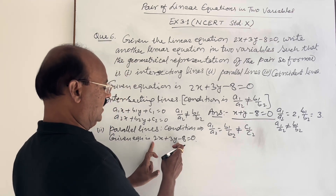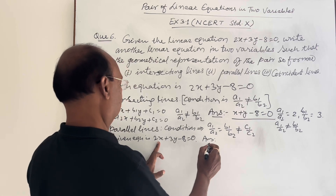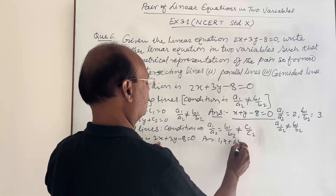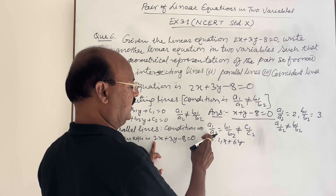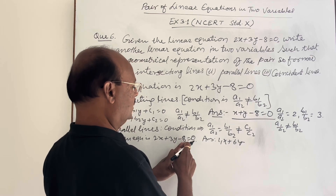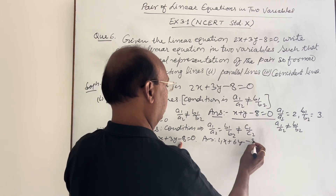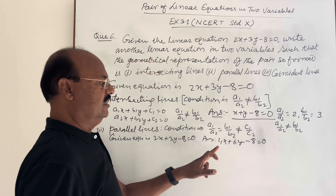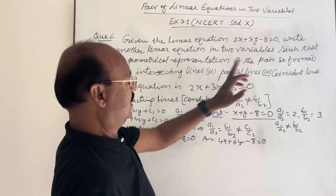So let us multiply the x and y part by 2. The answer will be 4x + 6y, so that a1/a2 = 1/2 and b1/b2 = 1/2 as well. We keep the constant term as -8, so that c1/c2 will not be equal. The answer for case 2 is 4x + 6y - 8 = 0, when lines are parallel.